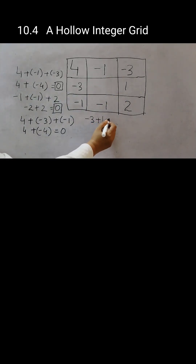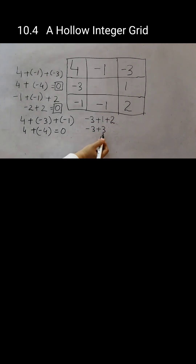Now the right column: minus 3, plus 1, plus 2. Minus 3 and 1 plus 2 is 3 — same number, opposite sign.